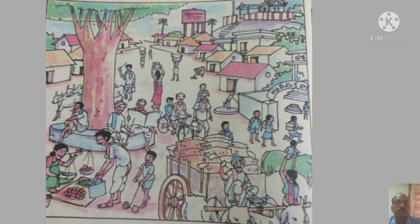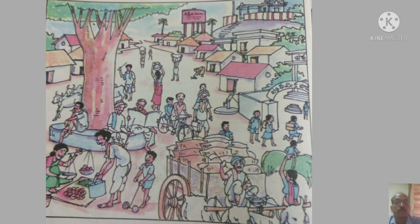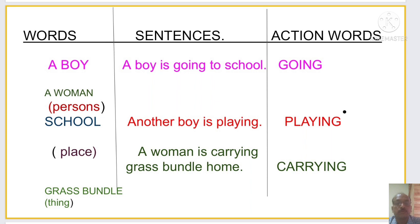Dear children, now look at the picture once again. In the first column, you have to write words — for example: a boy, a woman — those are persons. And grass bundle — that is a thing. And school — that is a place. In the third column: going, carrying, playing, like that.